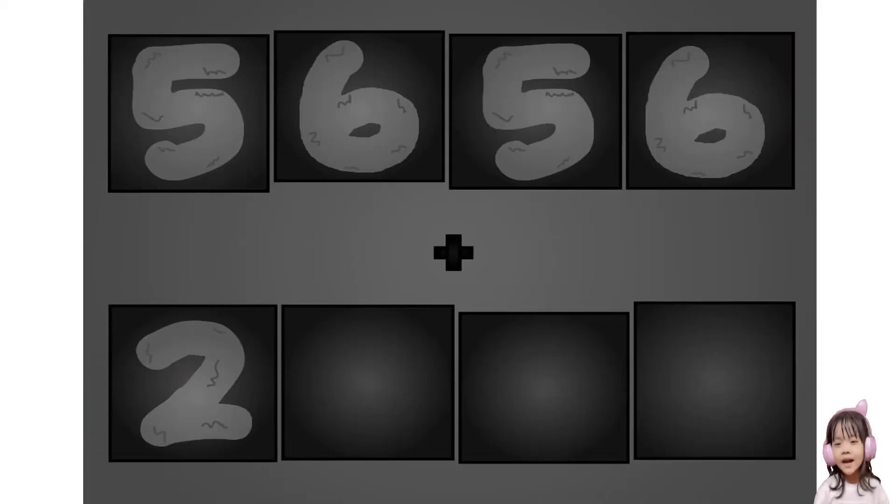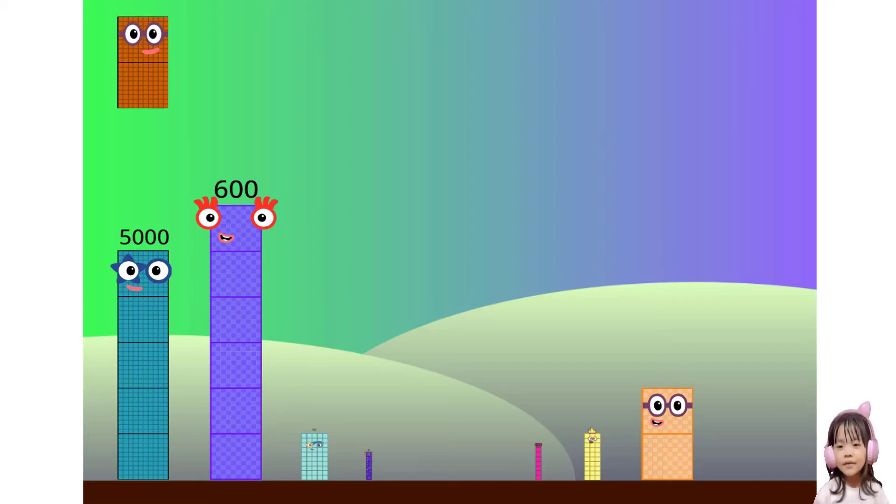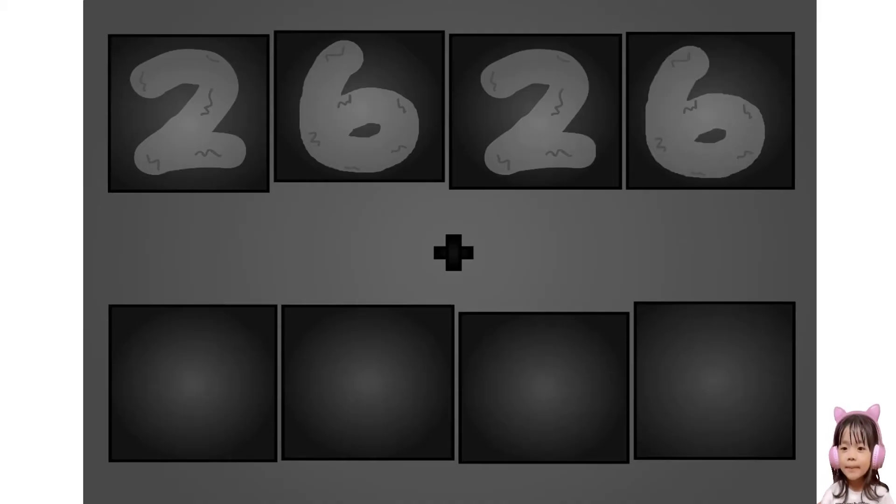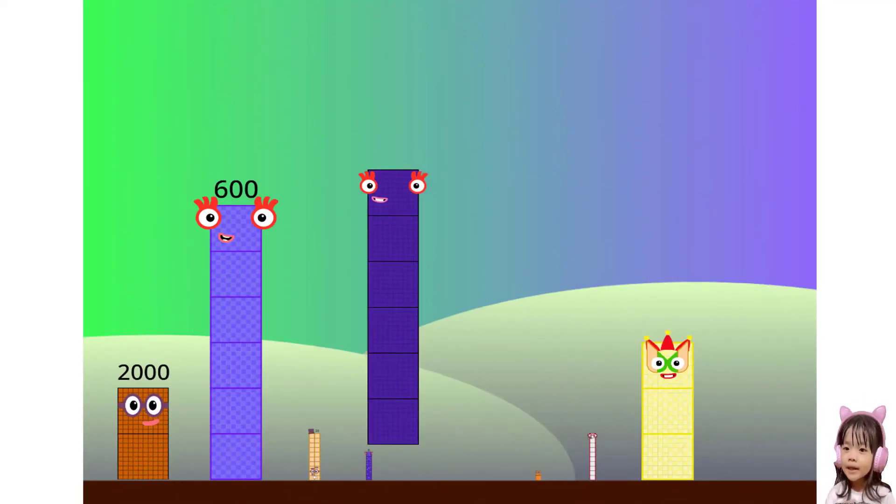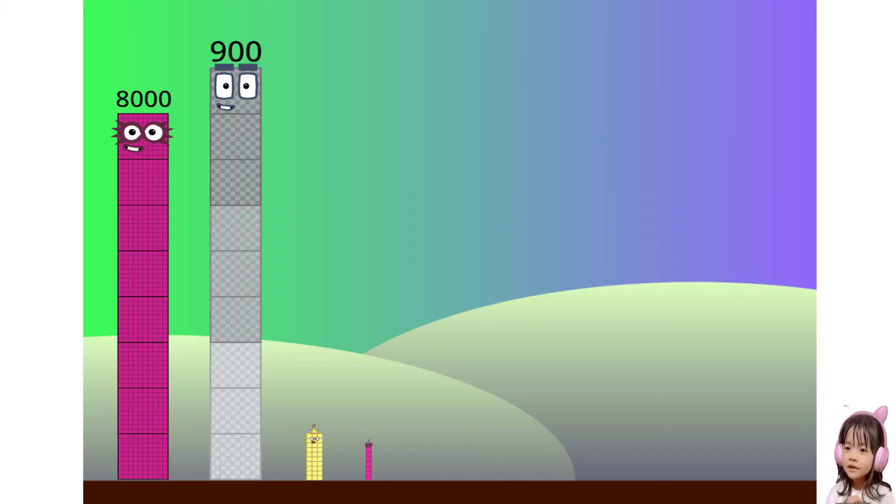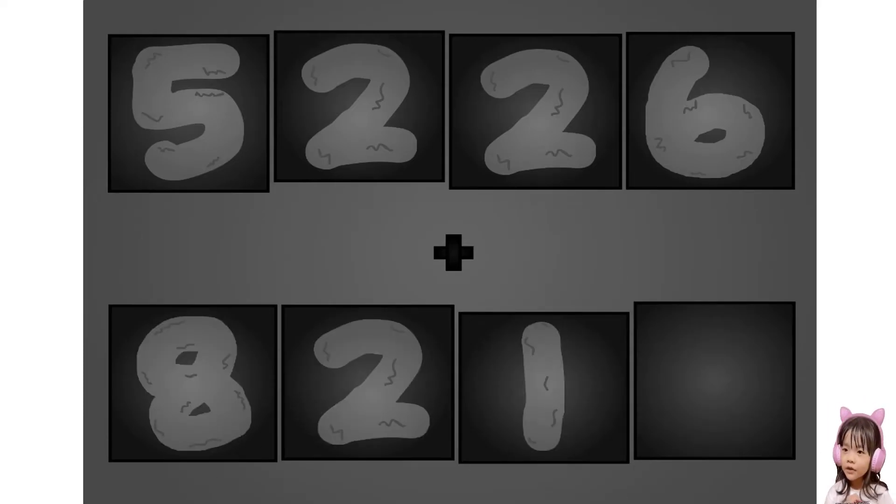Five six five six plus two two three eight. Here they come. Wow, awesome. Five two two six plus six two one four. These big number blocks are going to show it off by adding.